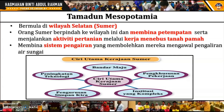Kita tengok apa yang berlaku dalam kerajaan Sumeria. Ia bermula di wilayah selatan, iaitu Sumer. Orang Sumer berpindah ke wilayah ini untuk membina pertempatan. Untuk kelangsungan hidup, mereka memerlukan makanan, maka mereka mula menjalankan aktiviti pertanian. Mereka melakukan kerja menebus tanah pamah untuk aktiviti pertanian. Namun pertanian memerlukan sumber air, maka orang Sumeria membina sistem pengairan yang membolehkan mereka mengawal pengaliran air sungai sebagai sumber air untuk aktiviti pertanian.